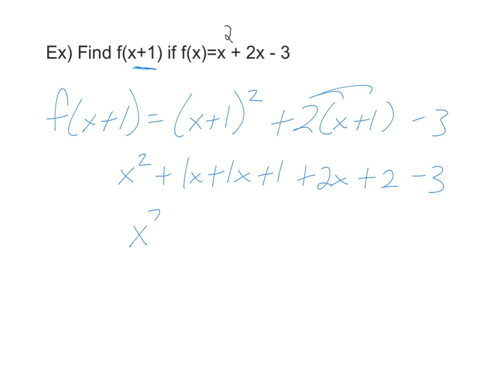From there you can combine your like terms, which should be x squared plus 2x plus 4x, and then the 1 plus 2 and the negative 3 will cancel out. So my final answer is x squared plus 4x.